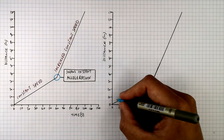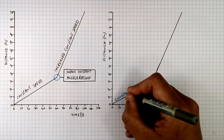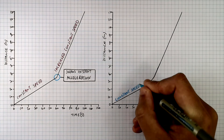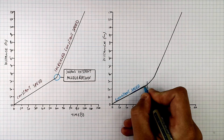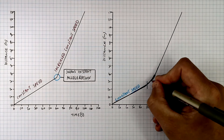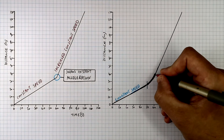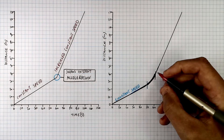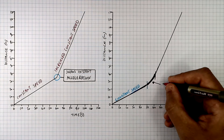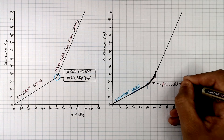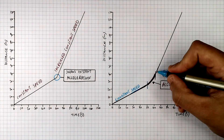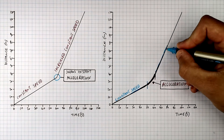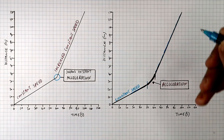So the car starts off its journey at a constant speed, and this curve here shows an acceleration — an increase in its speed. So the object will now have an increased constant speed.